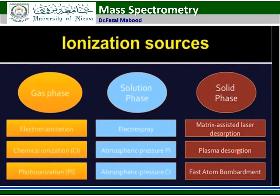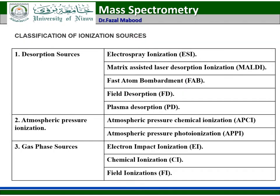The classification of ionization sources includes desorption sources, atmospheric pressure ionization, and gas phase ionization. Desorption sources include electrospray ionization, matrix-assisted laser desorption ionization (MALDI), fast atom bombardment ionization, field desorption ionization, and plasma desorption ionization. Atmospheric pressure ionization includes atmospheric pressure chemical ionization and atmospheric pressure photo ionization. Gas phase ionization includes electron impact ionization, chemical ionization, and field ionization.